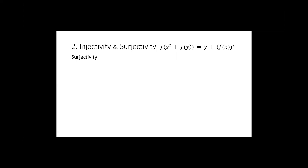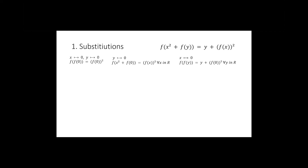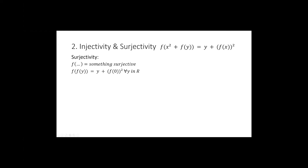And surjectivity is a bit simpler to prove. We just need to reduce to an equation where one side has f of something and the other side is a surjective expression. If the right-hand side is surjective, then the left-hand side also has to be surjective, so f is surjective. Going back to our substitution with x equal to zero, the left-hand side is f of something and the right-hand side is a surjective expression, since each real number can be written as a constant plus another real number. So we've proven f is both injective and surjective — f is bijective.